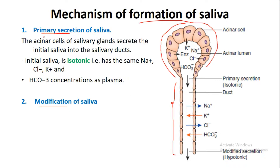In the first phase, the primary secretion of saliva, the acinar cells of the salivary gland secrete the initial saliva into the salivary ducts. The acinar cells secrete saliva into the acinar lumen, and from there it moves towards the duct of the salivary glands.